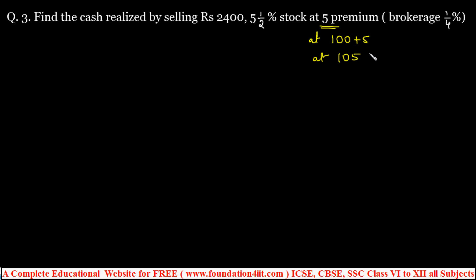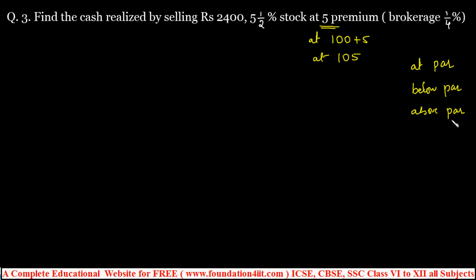The stock at 105 — this is the meaning of premium. Whenever you see the word 'premium,' add it to 100. If you see 'discount,' subtract from 100. 'Above par' means premium; 'below par' means discount; 'at par' means equal to 100. According to our question, the stock is now at 105.